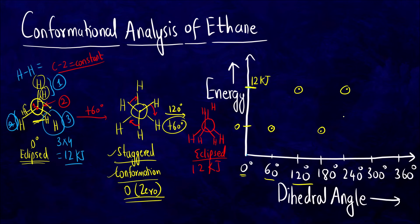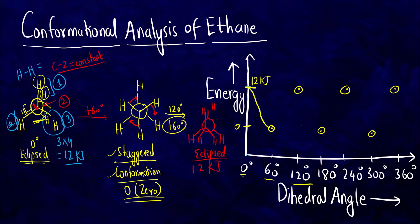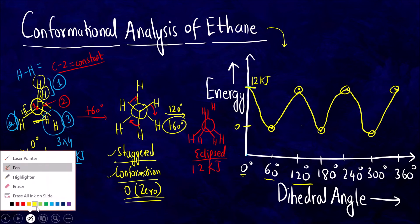Continuing the pattern: at 180 degrees — eclipsed; 240 degrees — eclipsed; 300 degrees — staggered; 360 degrees — eclipsed again. The graph looks like this: starting at 12, then 0 at 60, then 12 at 120, then 0 at 180... alternating up and down. This is how the conformational analysis graph of ethane looks.